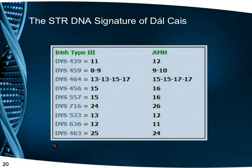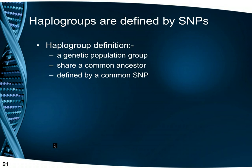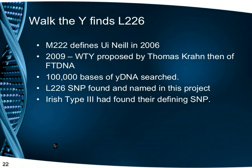Here is the full STR signature found for Irish Type 3 compared with the Atlantic Modal Haplotype. There are quite a few differences, but the two major ones are DYS 459 and DYS 464. The definition of a haplogroup is that it is a genetic population group of people who share a common ancestor defined by a common SNP. In 2006, a SNP M222 had been found that identified the northwest cluster, the O'Neill. From then, Irish Type 3 men had tested all SNPs available, but none were found to define our group.